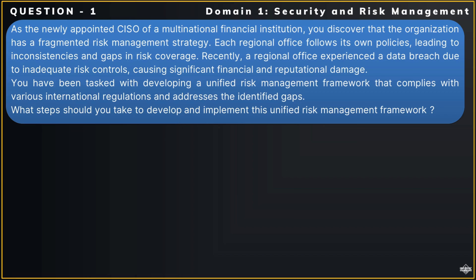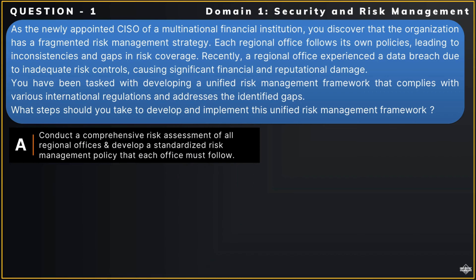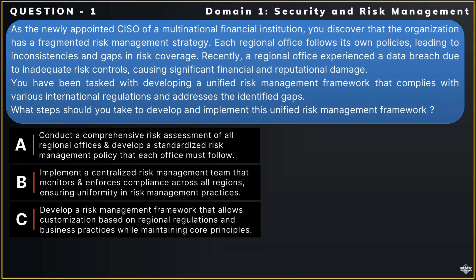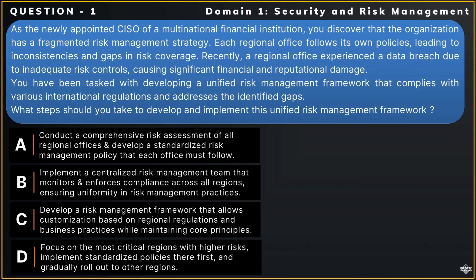Here are the options. Option A: Conduct a comprehensive risk assessment of all regional offices and develop a standardized risk management policy that each office must follow. Option B: Implement a centralized risk management team that monitors and enforces compliance across all regional offices, ensuring uniformity in risk management practices. Option C: Develop a risk management framework that allows customization based on regional regulations and business practices while maintaining core principles. Option D: Focus on the most critical regions with higher risks, implement standardized policies there first, and gradually roll out to other regions.